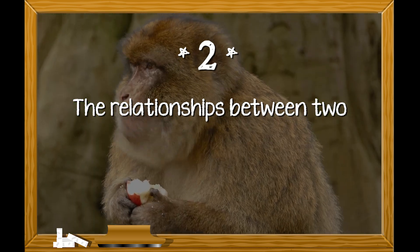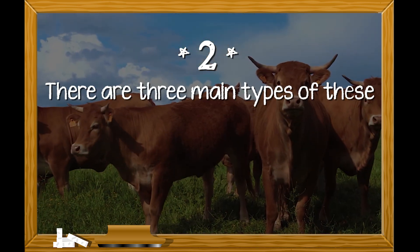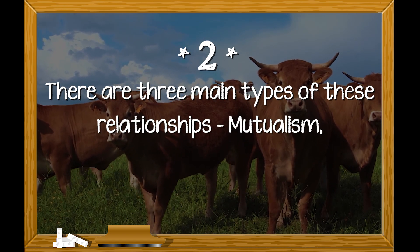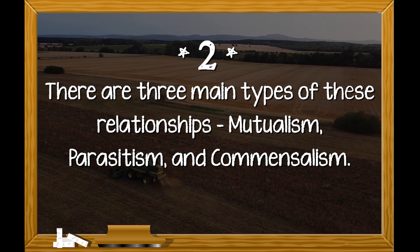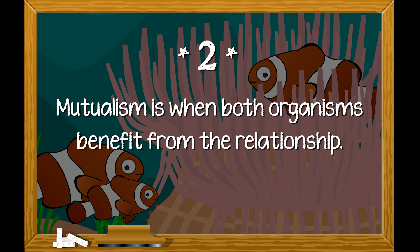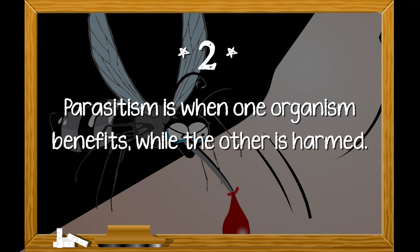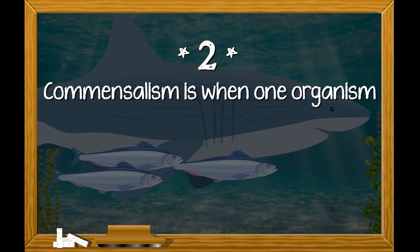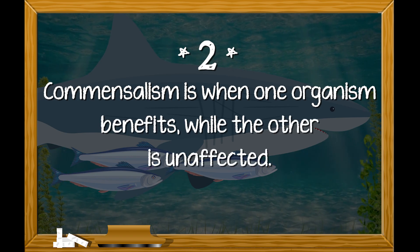Second, the relationship between two living things is called symbiosis. There are three main types of these relationships: mutualism, parasitism, and commensalism. Mutualism is when both organisms benefit from the relationship. Parasitism is when one organism benefits while the other is harmed. And commensalism is when one organism benefits while the other is unaffected.